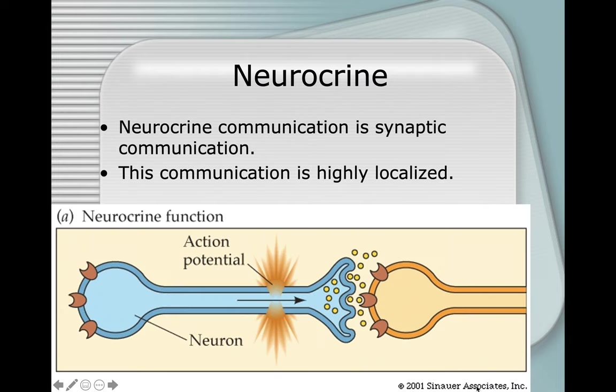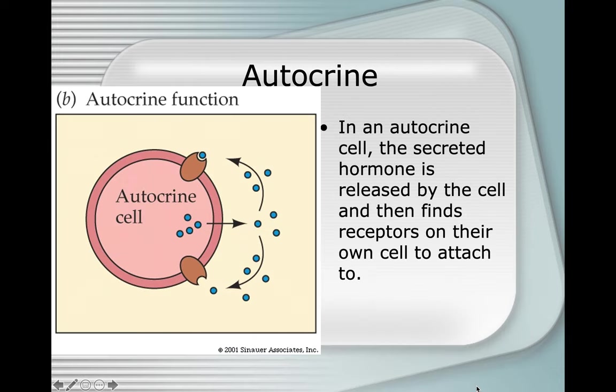Neurocrine communication is synaptic communication. This communication is highly localized. In autocrine function, the secreted hormone is released by the cell and then finds receptors on their own cell to attach to.